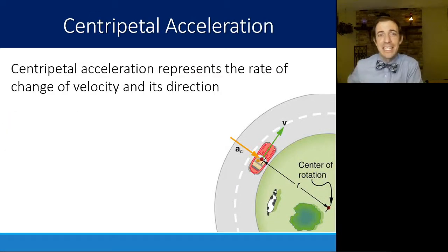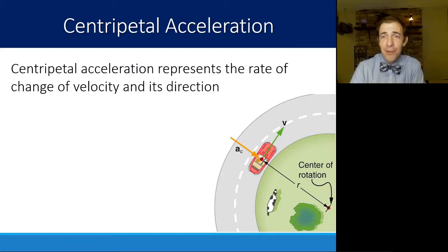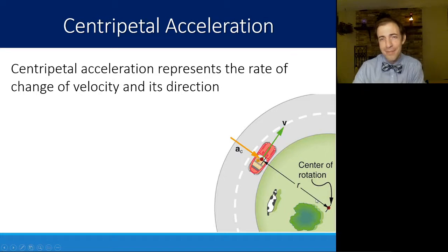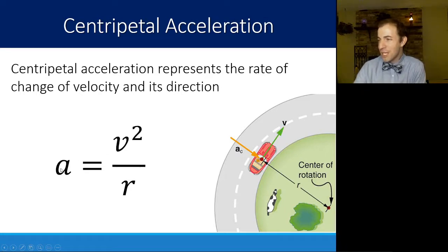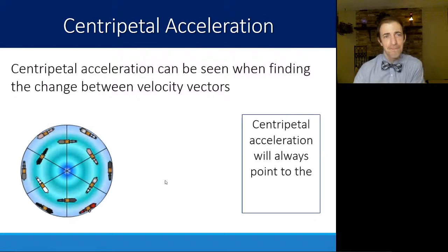Centripetal acceleration is the acceleration representing the rate of change of velocity — specifically its direction. So if there is a car traveling around a curve, even if the speedometer reads 60 or 30 miles per hour the entire time without wavering, it is still accelerating. It's just not getting faster or slower — it is changing direction. That acceleration points towards the center of the circle and can be calculated as linear velocity squared divided by the radius.